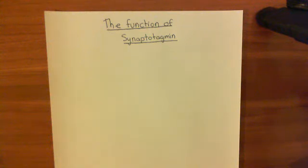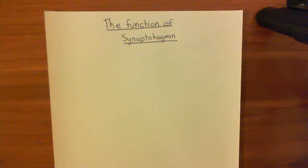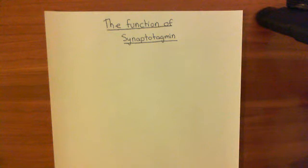Then I want to talk about the Rothman assay again. I will remind you of what the Rothman assay is, and I want to tell you what went wrong in that assay — why in the Rothman assay, SNARE proteins alone were enough to fuse two vesicles together, and what he did wrong, basically. Then we'll look at what happens if you do the Rothman assay right.